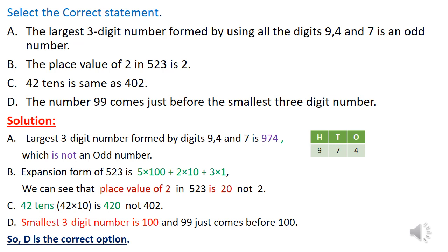B: The place value of 2 in 523 is 2. Let's check this. Expansion form of 523 is 5 into 100 plus 2 into 10 plus 3 into 1. We can see that place value of 2 in 523 is 20, not 2. So this statement is not correct.